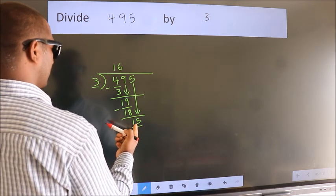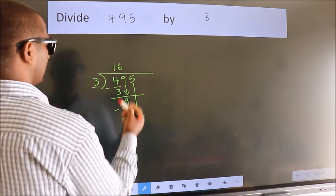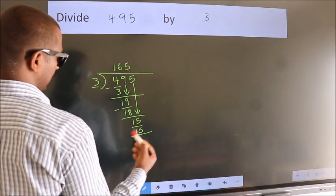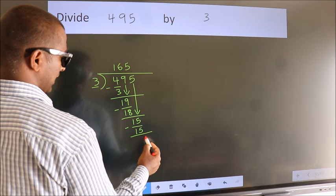When do we get 15? In 3 table. 3, 5, 15. Now, we subtract. We get 0.